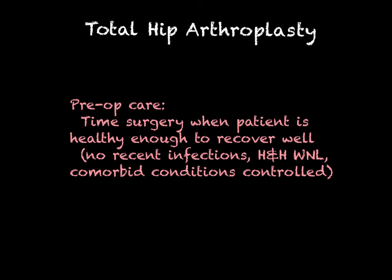Preoperatively for a hip replacement, you want to time surgery when the patient is optimally healthy. If they've had a UTI, respiratory infection, strep throat, or any other infection, postpone surgery until they're well — you don't want them at risk for osteomyelitis. The immune system, if already fighting one thing, doesn't need a new invasive portal of entry to defend. Make sure they're not anemic — H&H should be within normal limits — and that serious comorbidities like diabetes or renal failure are well controlled.